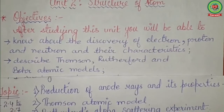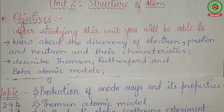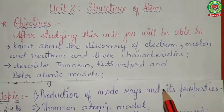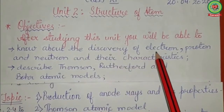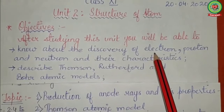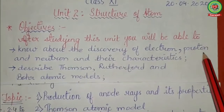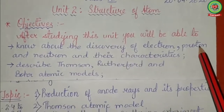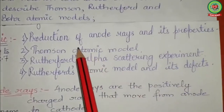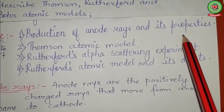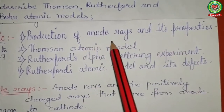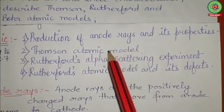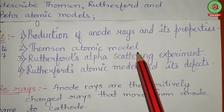Good morning students. Let's start with the day 2 discussion of the chapter Structure of Atom. Previously we have discussed about the discovery of electron, so today our point will be to discuss about the discovery of proton. Today's topic of discussion will be production of anode rays and its properties. As yesterday we discussed about cathode rays, today we'll be discussing about anode rays and Thomson's atomic model.